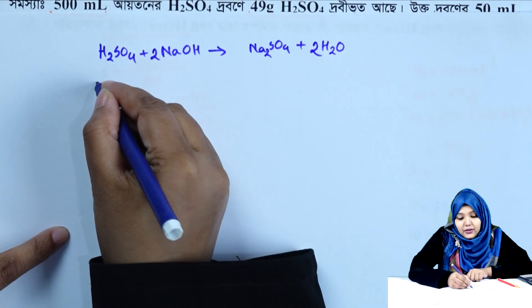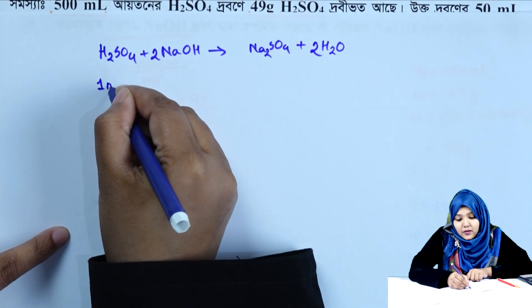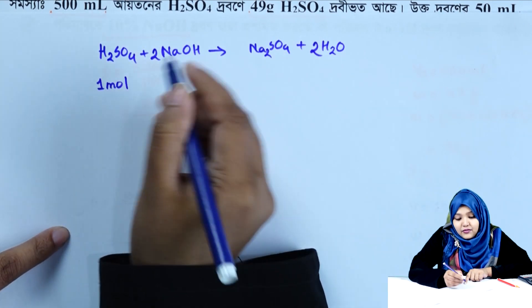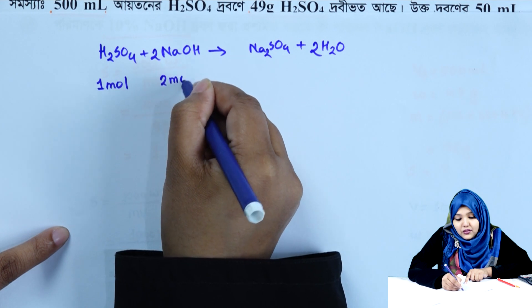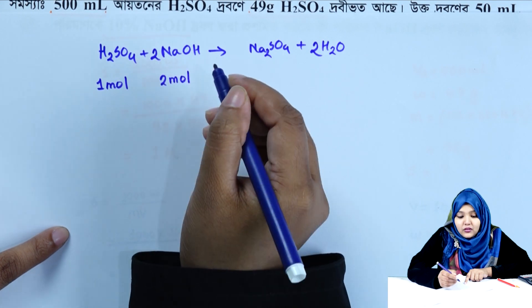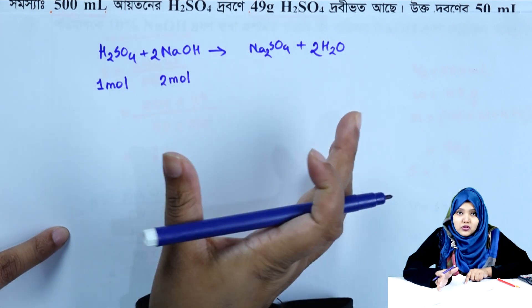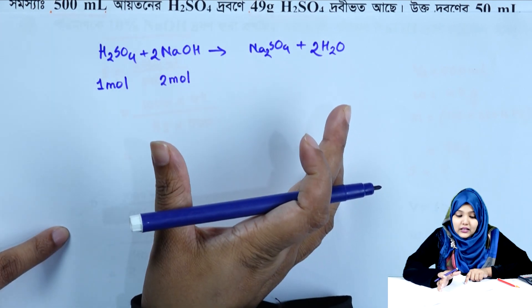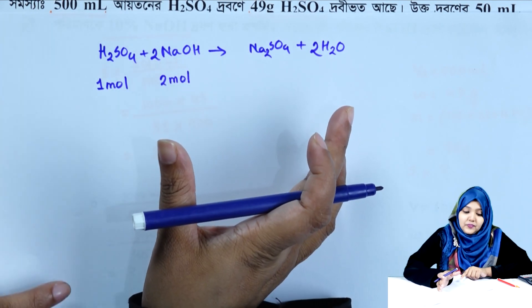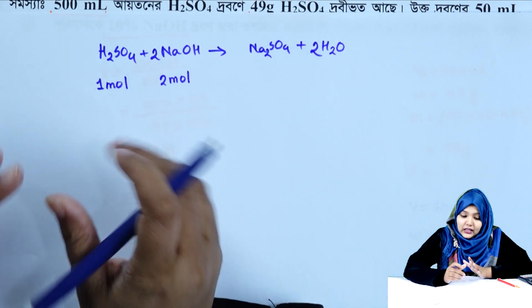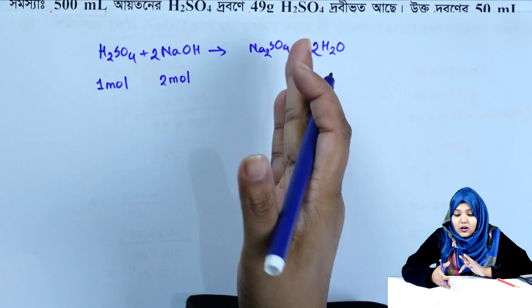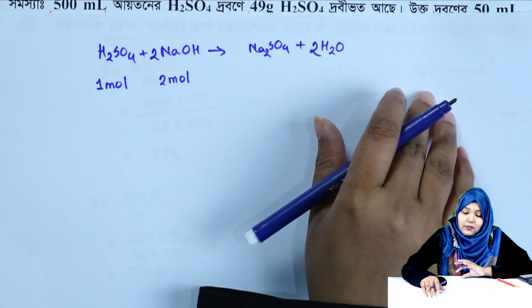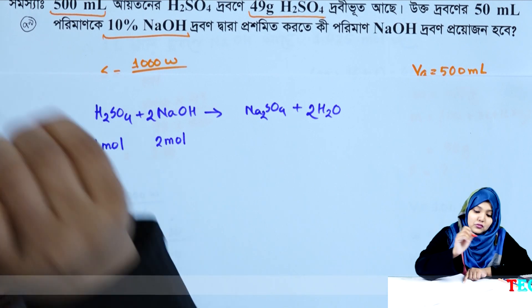The acid molecule is 100% dissociated. For sulfuric acid with poly-protic nature, the n-factor (valency) is 2. The acid-base reaction uses n-factor of 2 for sulfuric acid.